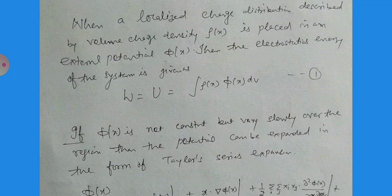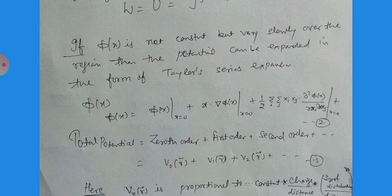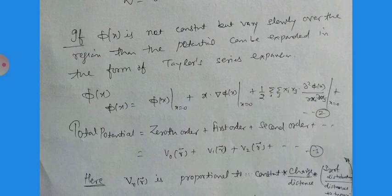The Taylor series expansion gives: φ(x) = φ(x)|ₓ₌₀ + x·∇φ|ₓ₌₀ + (1/2)Σᵢ Σⱼ xᵢxⱼ (∂²φ/∂xᵢ∂xⱼ)|ₓ₌₀ + ... This total potential can be written in terms of zeroth order, first order, and second order contributions.